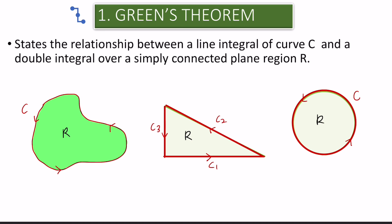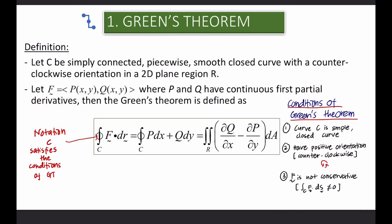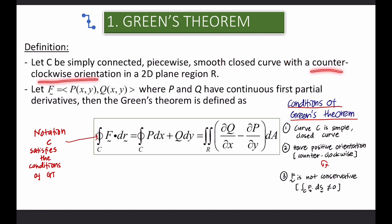Green's Theorem states the relationship between line integral and also double integral. Let's say we have line integral of C1, line integral of C2, and also line integral of C3, giving you the double integral of region R. To apply Green's Theorem, the curve C must be simply connected, piecewise smooth, and a closed curve with counterclockwise orientation, or positive orientation, into the plane region R.